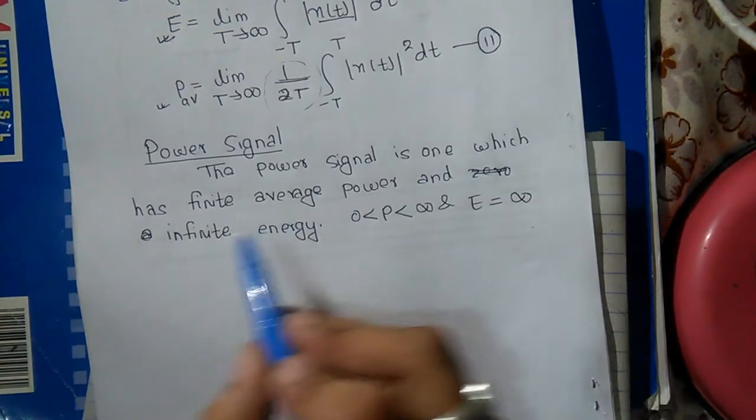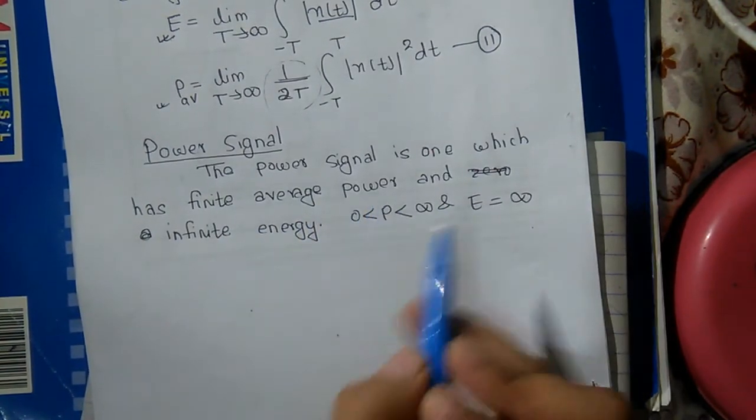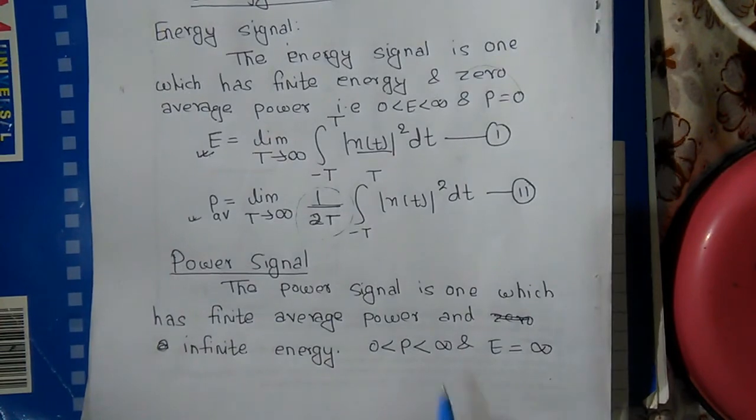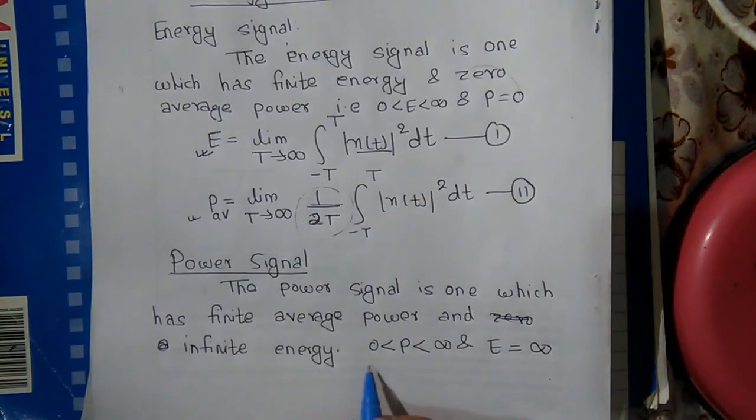Power signal is one which has finite average power but infinite energy. It is a power signal we need to satisfy this condition.